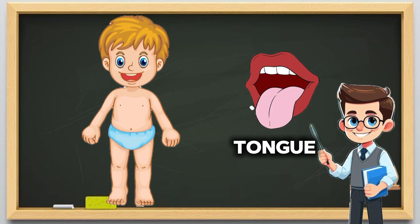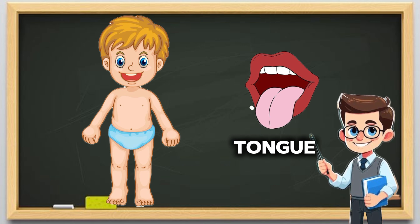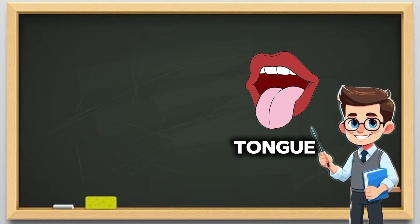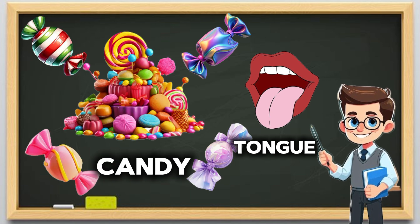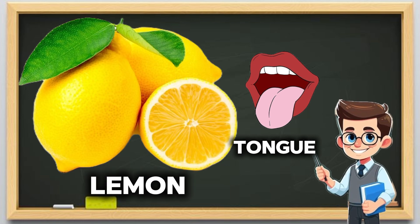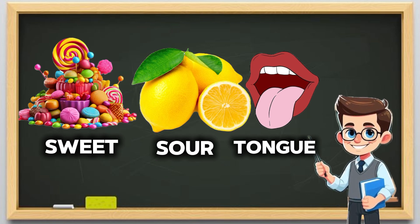4. Taste. Tongue. This is our tongue. We use it to taste food. Some food is sweet, like candy. Some food is sour, like lemon.